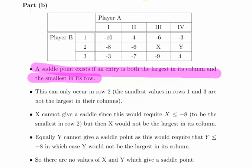Let's just look at that for a second. Let's look at column one or row one. Now the smallest value there is minus 10, but that's not the largest value in its column. So it's actually also the smallest value in its column. So we don't have a saddle point there in row one.